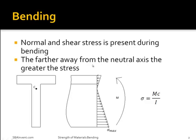To start off, bending consists of both normal and shear stress when the beam is being deflected. For this video, however, I'm only going to talk about the normal stress, which is commonly referred to as the bending stress of a beam. When you're dealing with bending stress, you have a certain stress profile, which you can see here. Basically, this profile states that the point farthest away from the neutral axis has the highest stress, while at the neutral axis there would be no stress.